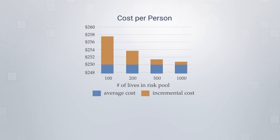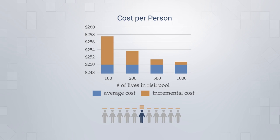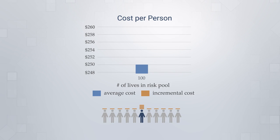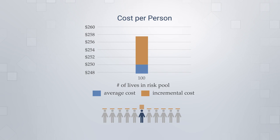This graph illustrates the impact of pooling, where in each pool there is one person with extremely high costs that are spread across everyone. If the average non-high-cost person has a cost of $250, the incremental impact of pooling decreases as the group size gets larger. In a group with 100 people, the incremental cost of pooling that one high-cost individual would be an additional $8. When the group size increases to 200 people, that incremental cost is cut in half to $4.